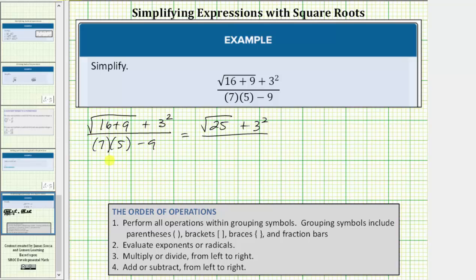So it's important to recognize that the square root of sixteen plus nine does not equal the square root of sixteen plus the square root of nine. We need to find this sum under the square root before we take the square root.